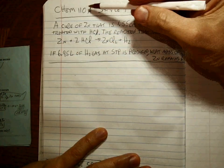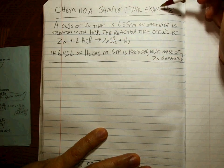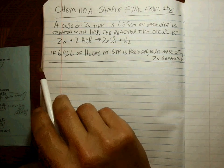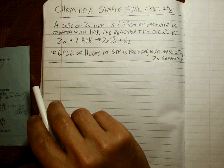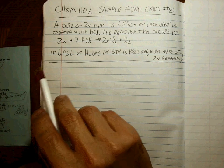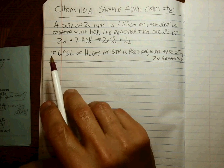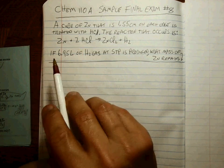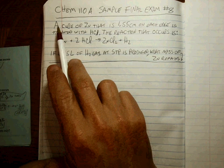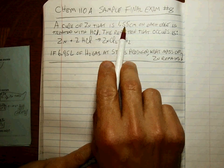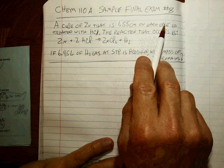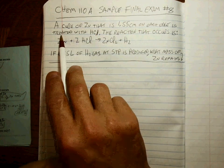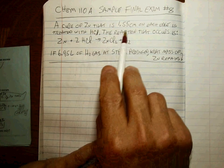Welcome back. Chem 110, sample final exam problem number eight — the one that most people are the most confused by. The reason is they don't really know how to think this through and don't realize that it's two problems put together. A cube of zinc that is 1.55 centimeters on each edge is treated with HCl — meaning reacted with HCl.